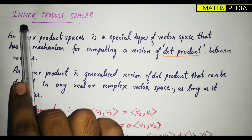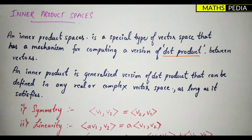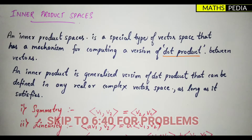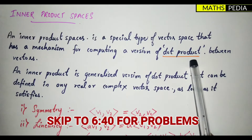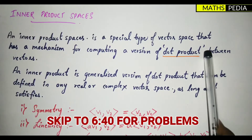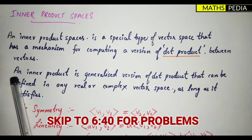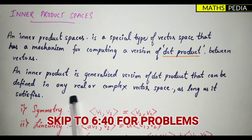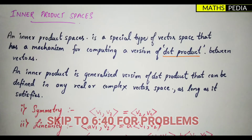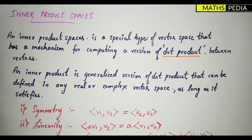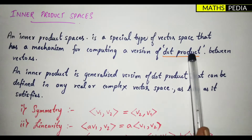In this video we are going to discuss inner product spaces, their properties, the conditions to be satisfied for the inner product, and solve some problems. An inner product space is a special type of vector space that has a mechanism for computing a version of dot product between vectors. An inner product is a generalized version of dot product that can be defined in any real or complex vector space as long as it satisfies a few conditions. You just need to understand the concept behind inner product spaces.